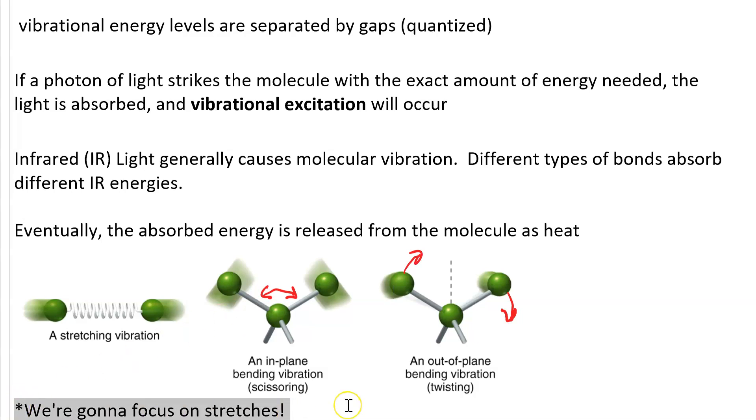Then you can have out-of-plane bending vibrations where these things are twisting. But the easiest features in an IR spectrum to pick out are the stretching vibrations.